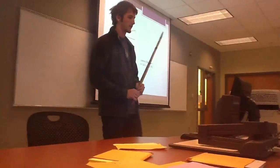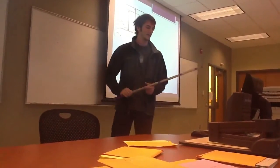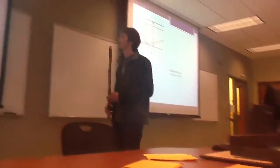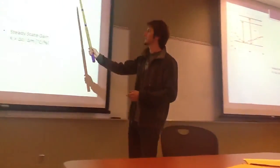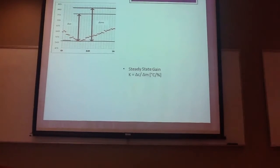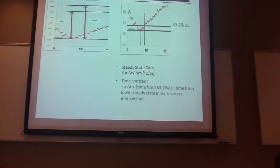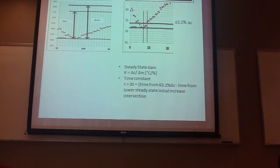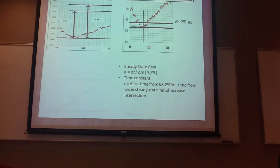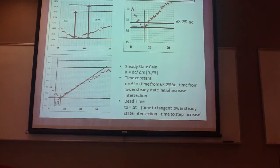This is the FIT2 procedure, to find the delta C and delta M, we have the line going to the steady state, and then the line for the bottom of the output. Then, this is an example of the time constant, and then we have an example of the dead time.